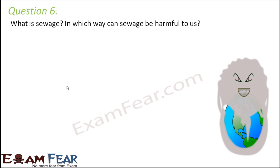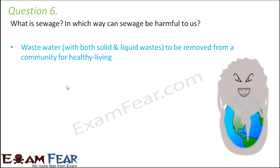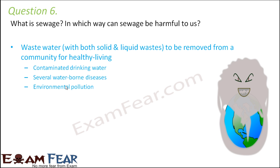Question number 6: What is sewage? In which way can sewage be harmful to us? Sewage is waste water containing both solid and liquid wastes. It is unhealthy because it can give rise to several diseases, pollute drinking water, and cause water pollution, so it needs to be removed from a community for healthy living. Harmful effects include contaminated drinking water leading to diseases like typhoid and cholera, as well as various waterborne diseases and environmental pollution.